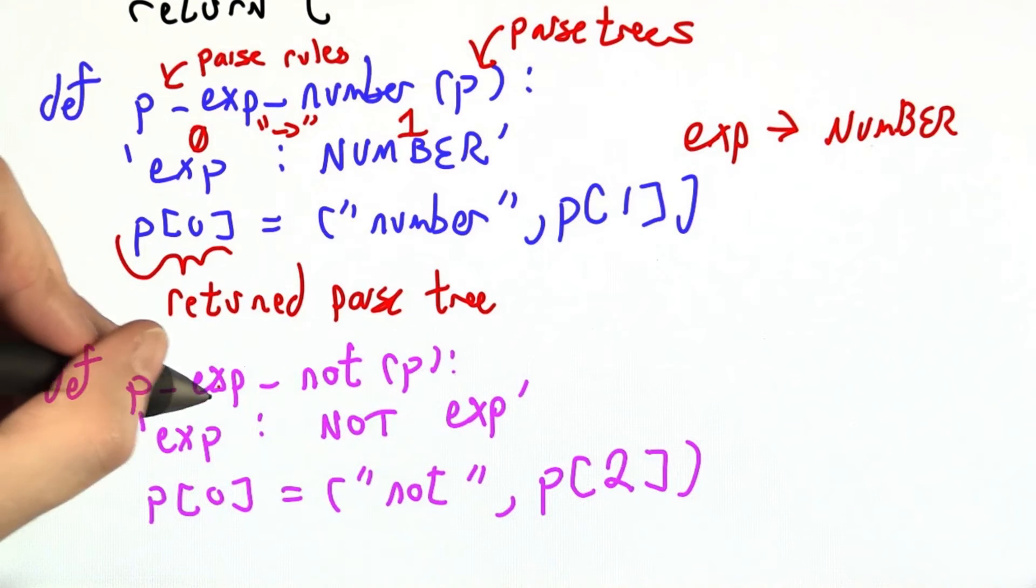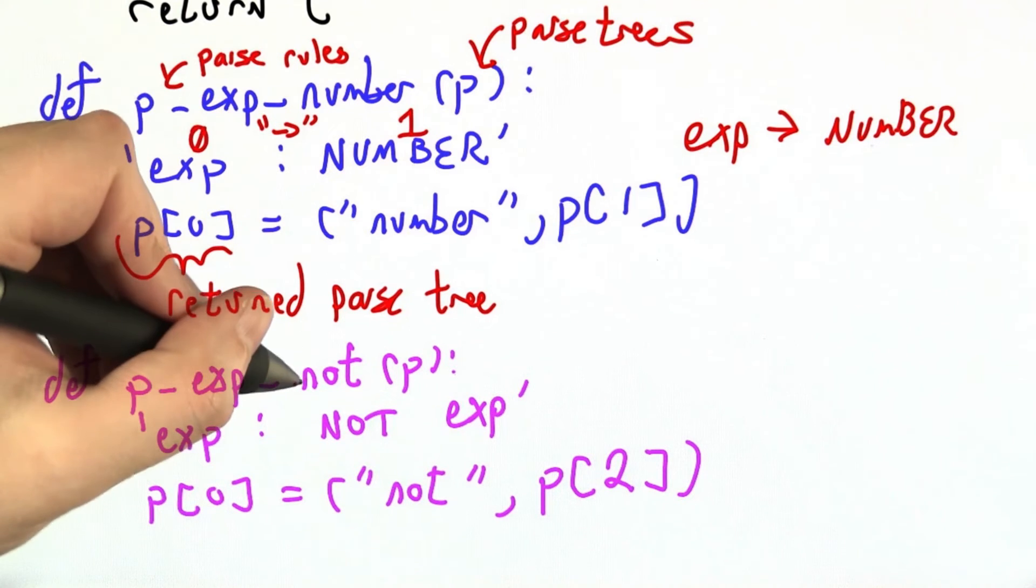Here's what I'm telling you how to parse. I'm telling you how to parse an expression. There might be multiple different ways to parse an expression. It could be a number, it could be a not expression. So we'll use another underscore and be a little more specific.